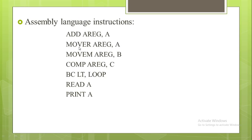The next instruction is MOVEM A, Register A, B, which moves the content of Register A into B. The next instruction compares the content of Register A with the content of C and sets the appropriate condition code. The instruction BC LT LOOP transfers control to the statement labeled LOOP if condition code LT is set. READ A reads input from the keyboard and stores it into A, and PRINT prints the content of A onto the screen.